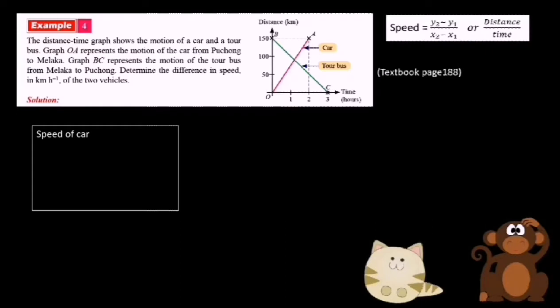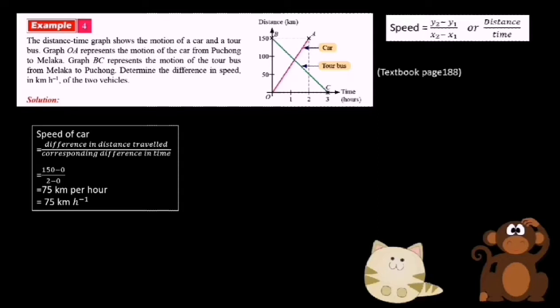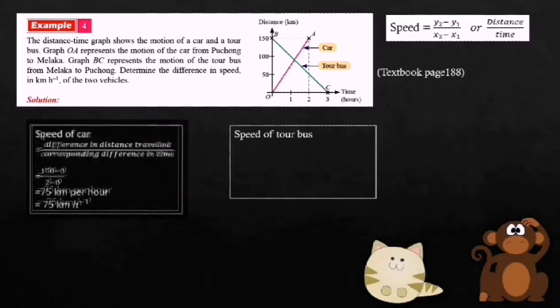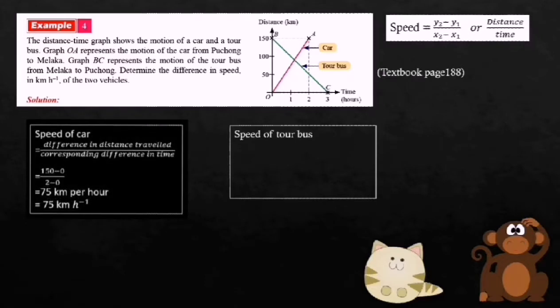The formula for speed equals the difference in distance traveled over the corresponding difference in time. The corresponding difference in time is 2 minus 0. So the speed of the car equals 75 kilometers per hour.